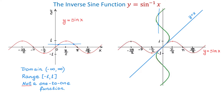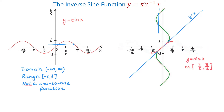What we have to do is restrict the domain of the sine function to the interval from negative pi over 2 to positive pi over 2. I will erase the graph to the left of negative pi over 2 and to the right of positive pi over 2. On this restricted domain, the sine function passes the horizontal line test, which means it has an inverse.